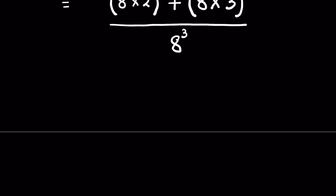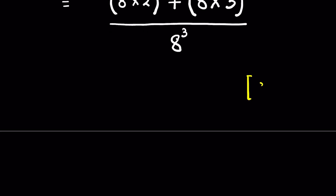Now there is an identity where a times b, whole raised to the power m, can be written as a raised to the power m times b raised to the power m.